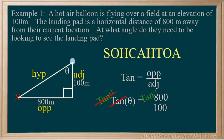And on the right, we have the inverse tan of 800 over 100. And we can solve for that, theta is 83 degrees.